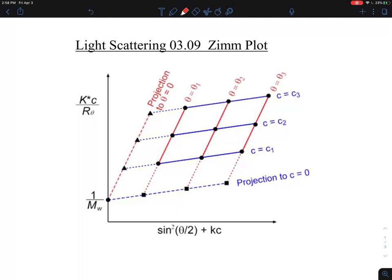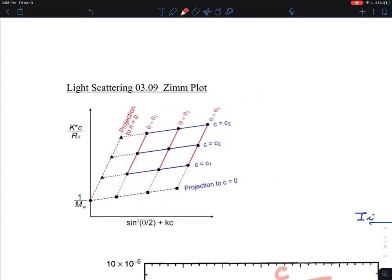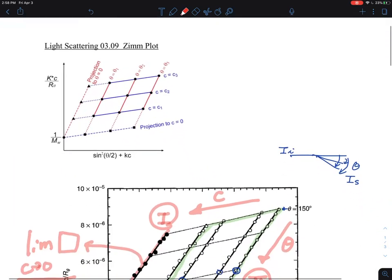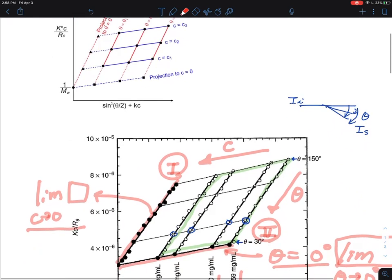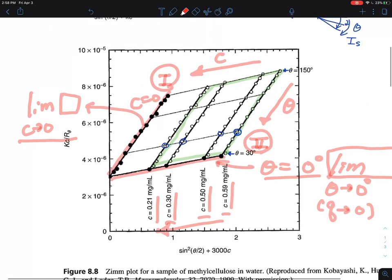Another version that you can find on the internet is people do it differently. Some people put data in a different way. Projection to the zero concentration, projection to the theta concentration. So these two are, I didn't notice that they are in the reverse way, but I guess they can do whatever they want.